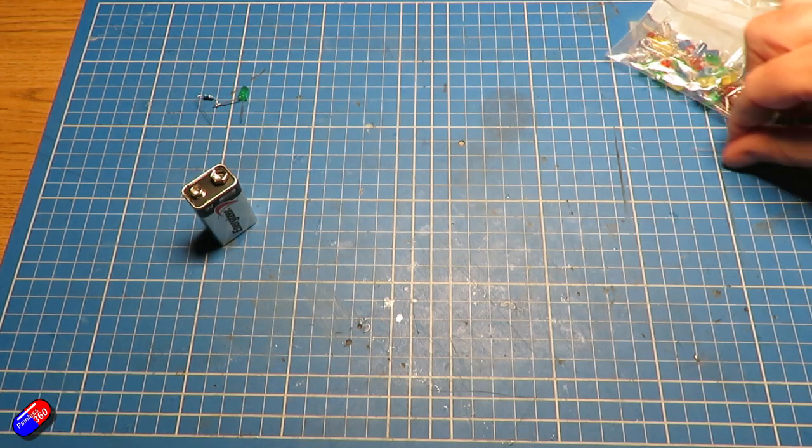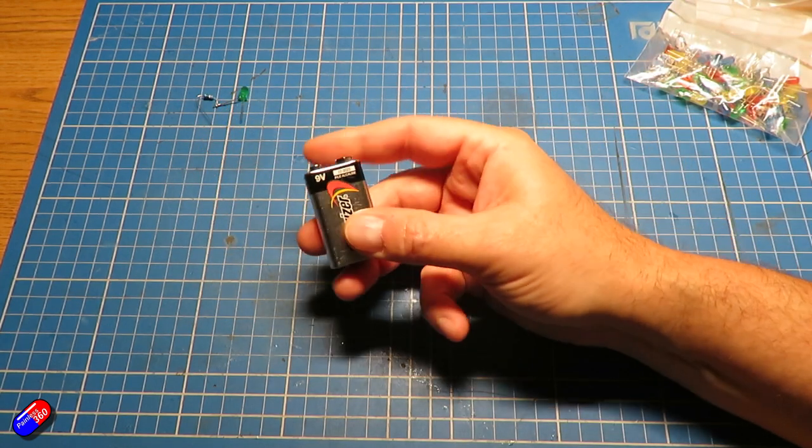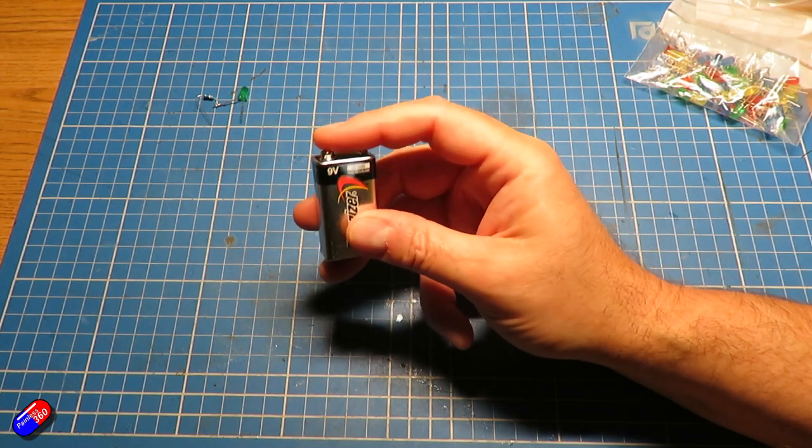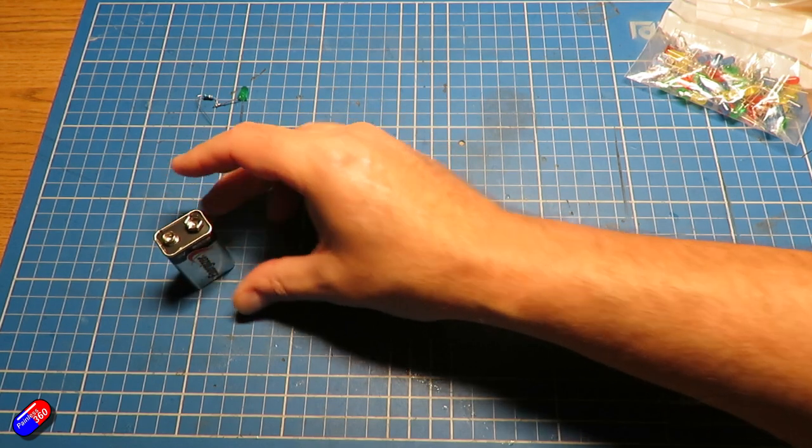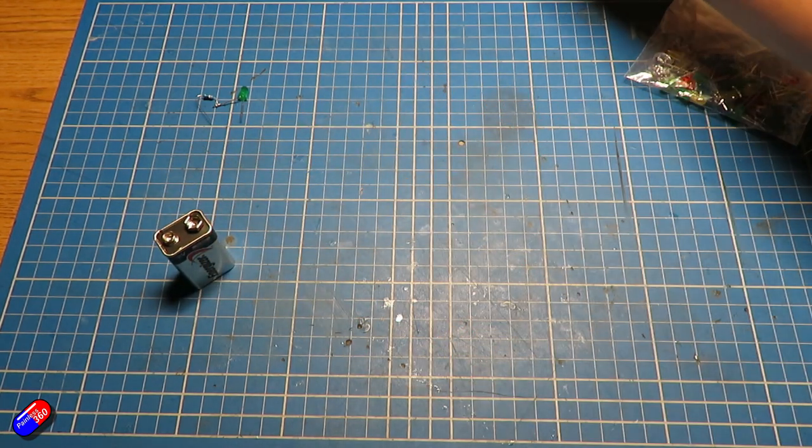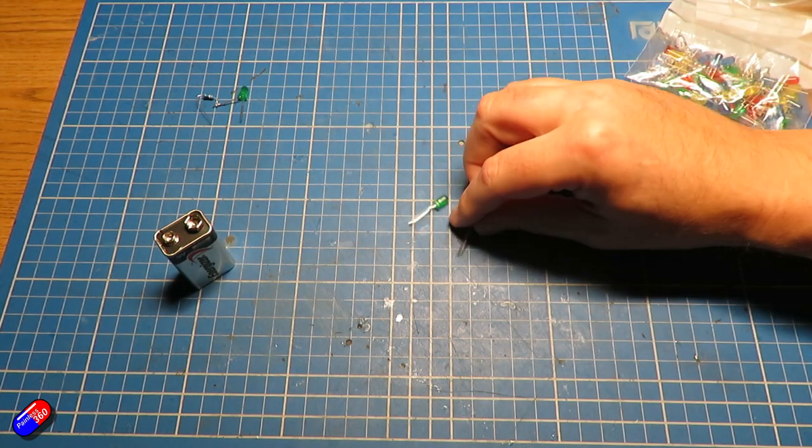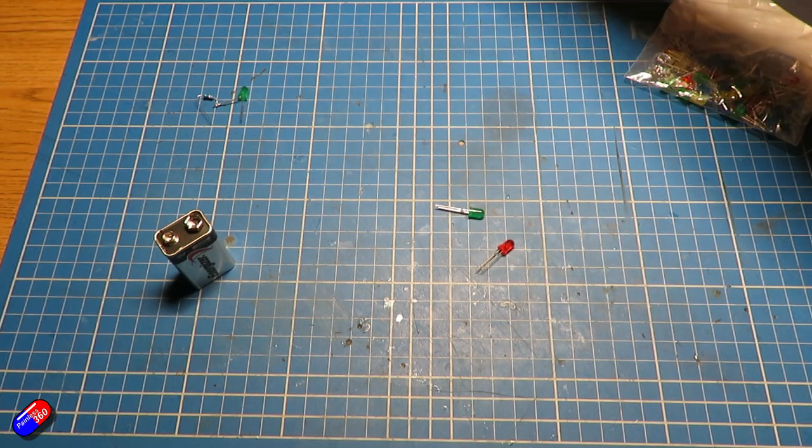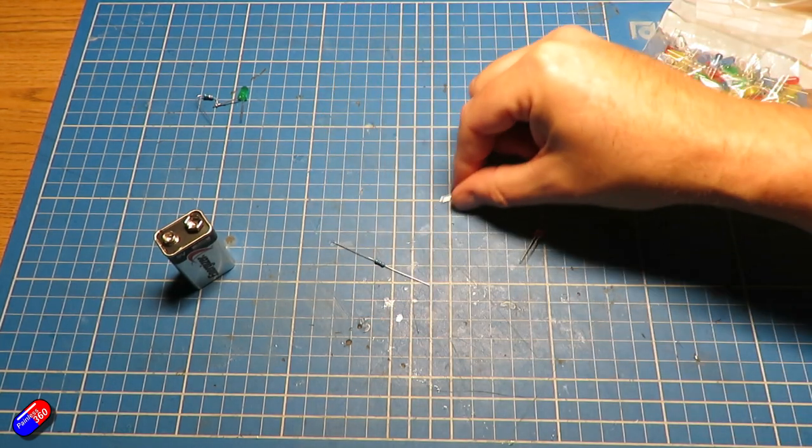Again you can use whatever voltage you want for the battery, just see what's on there because you can use exactly the same equation. So this time what we'll do is let's use two different colors. We'll use a red one and a green one and we need to figure out the value of this resistor.